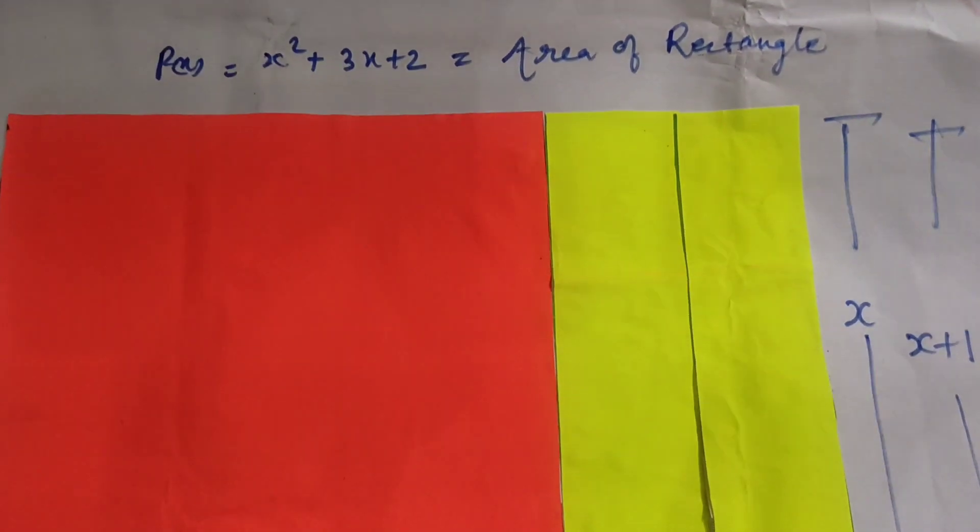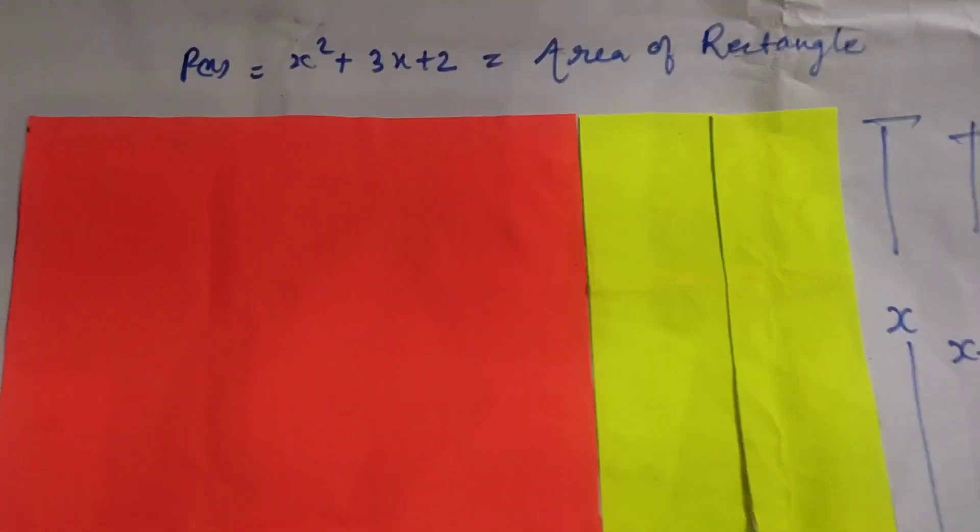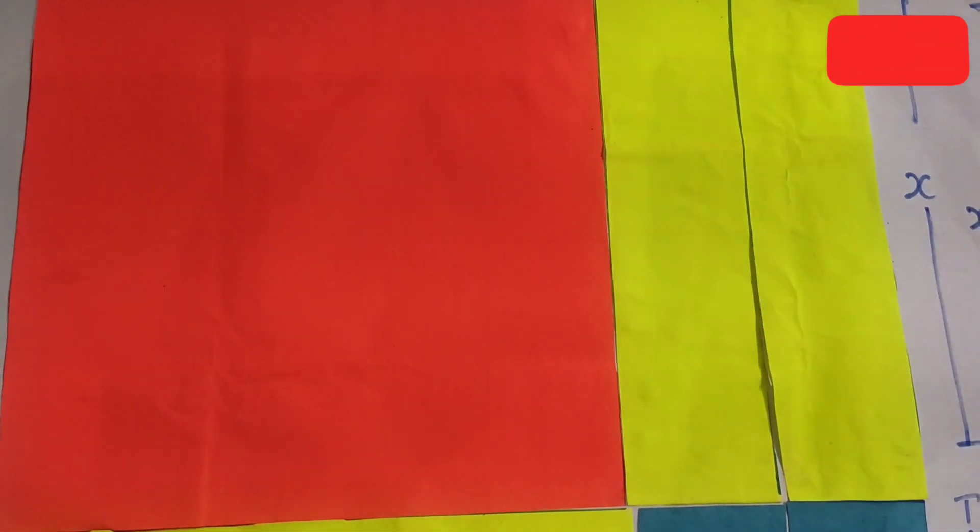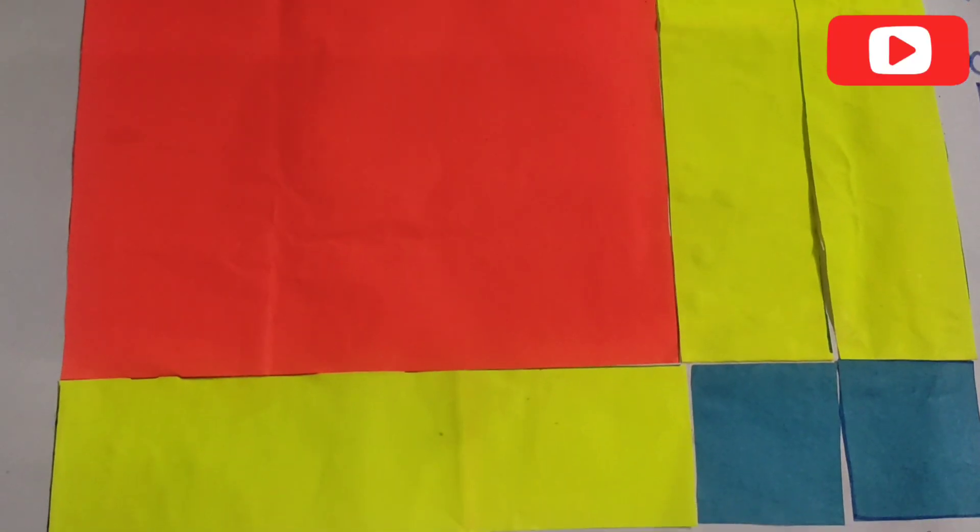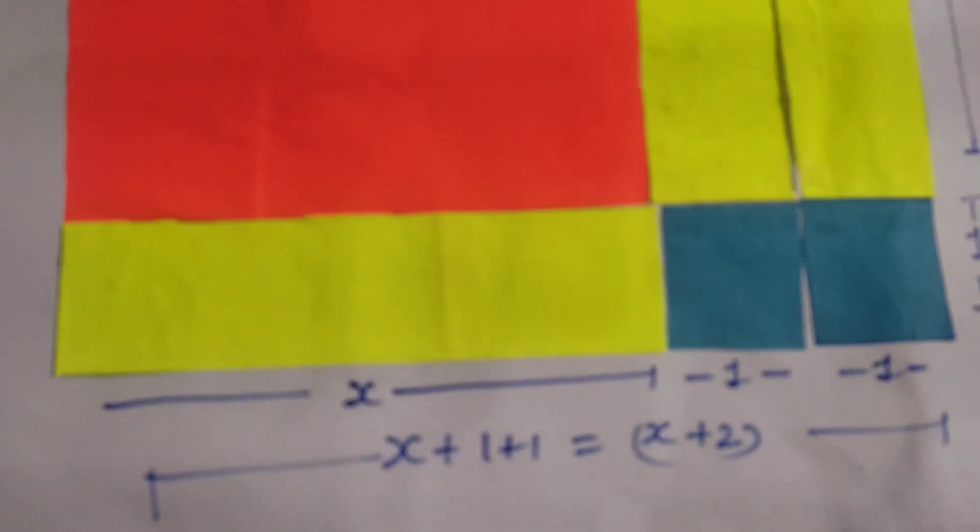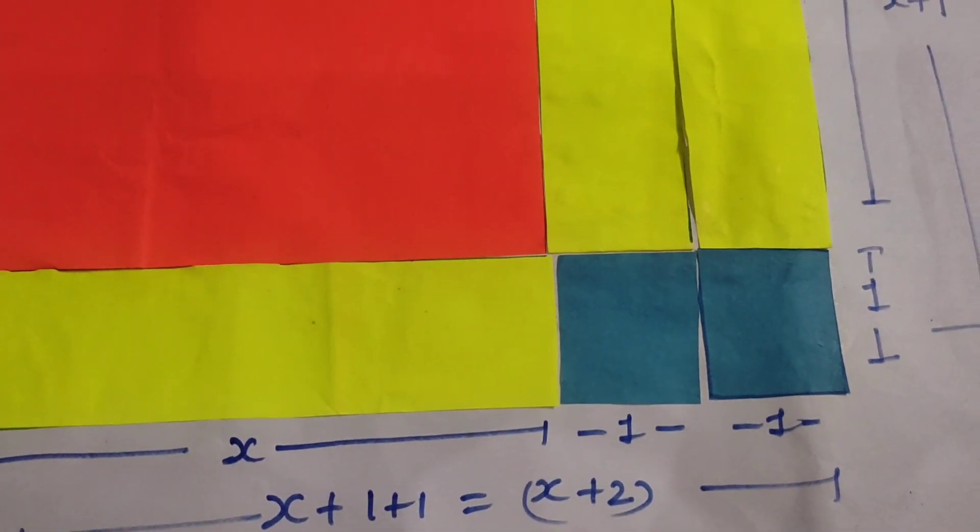By doing this activity, we have got the factors of polynomial Px, which are x plus 1 and x plus 2. So students, I hope you have enjoyed this activity and you must try this activity again. I am sure after doing this activity, you will never forget the factorization of the quadratic polynomial. Thank you.